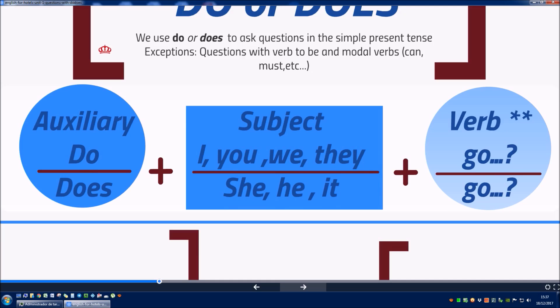With DO, we use the subjects I, YOU, WE and THEY. And with DOES, we use the subjects SHE, HE, IT.